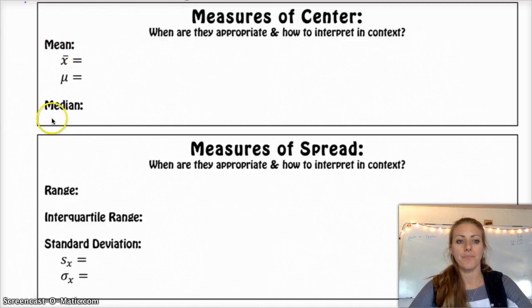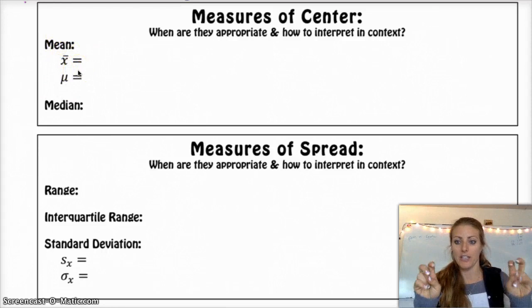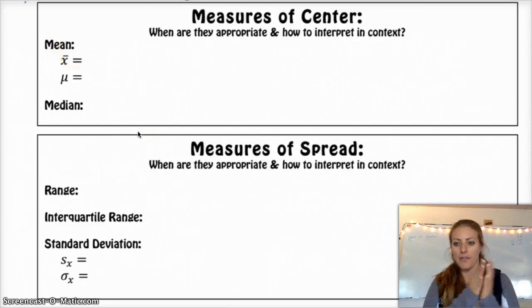The median we already talked about how to find. That's the 50% of the data, splits the data in half. The mean, hopefully, this is what you typically know of as the average, which is you add up all the values and divide by how many there are.